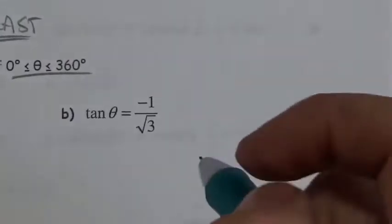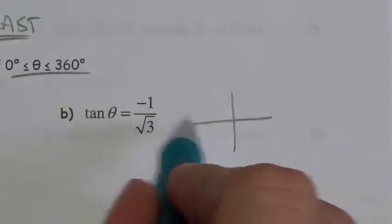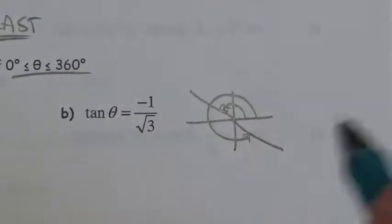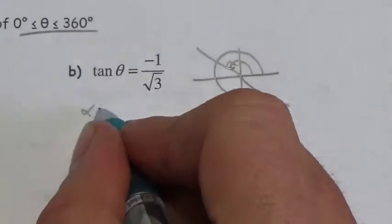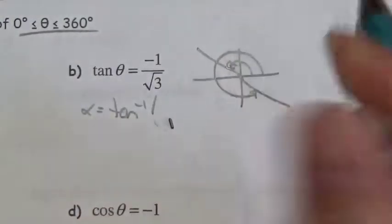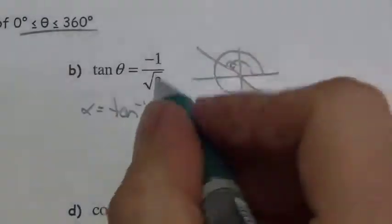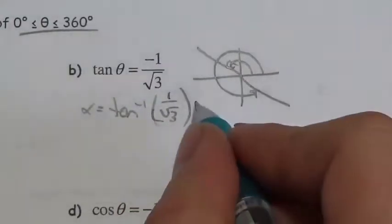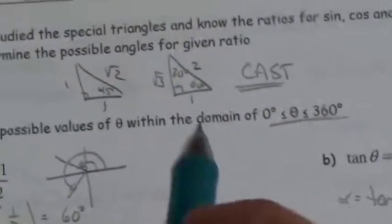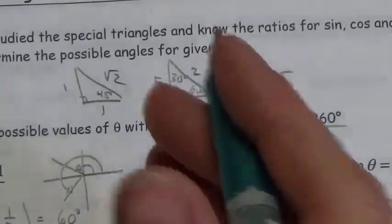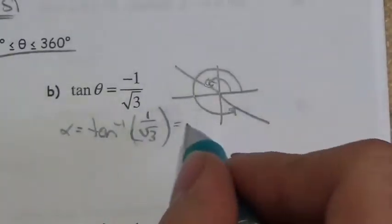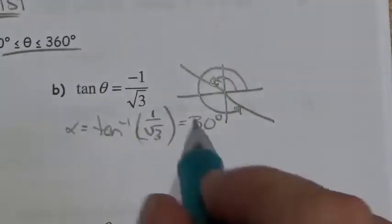Next: tangent equals negative 1 over root 3. First, where is tangent negative? That's quadrants 2 and 4, so I'm looking for angles in those two quadrants. Then I figure out the size of the angle — the inverse tangent of 1 over root 3. The root 3 shows up in the 30-60-90 triangle: opposite is 1, adjacent is root 3, and that angle is 30 degrees. So my reference angle is 30 degrees.